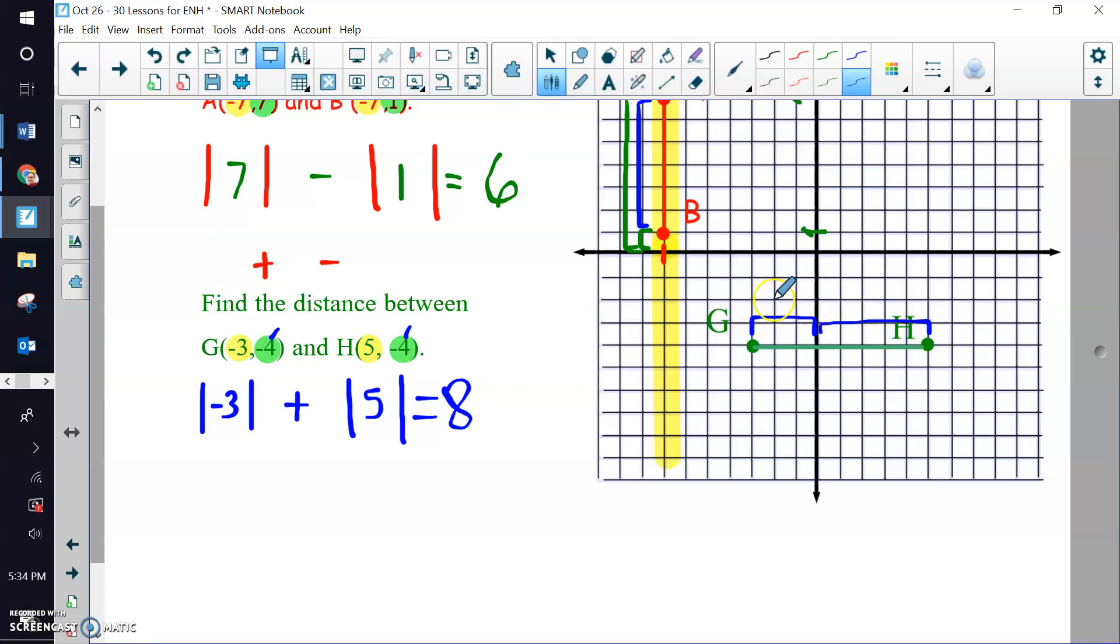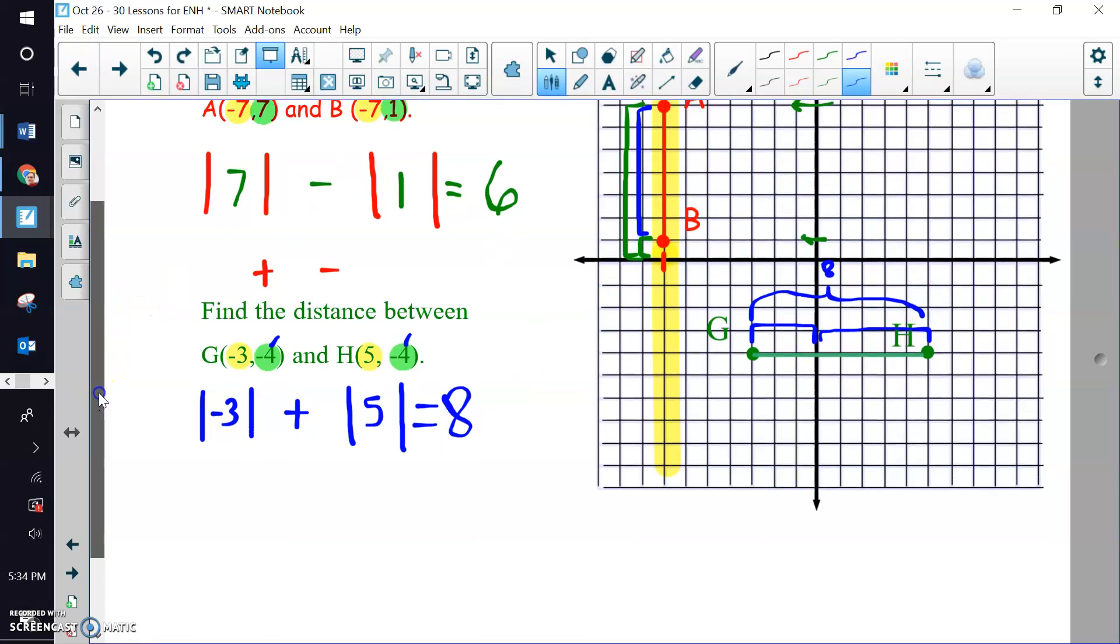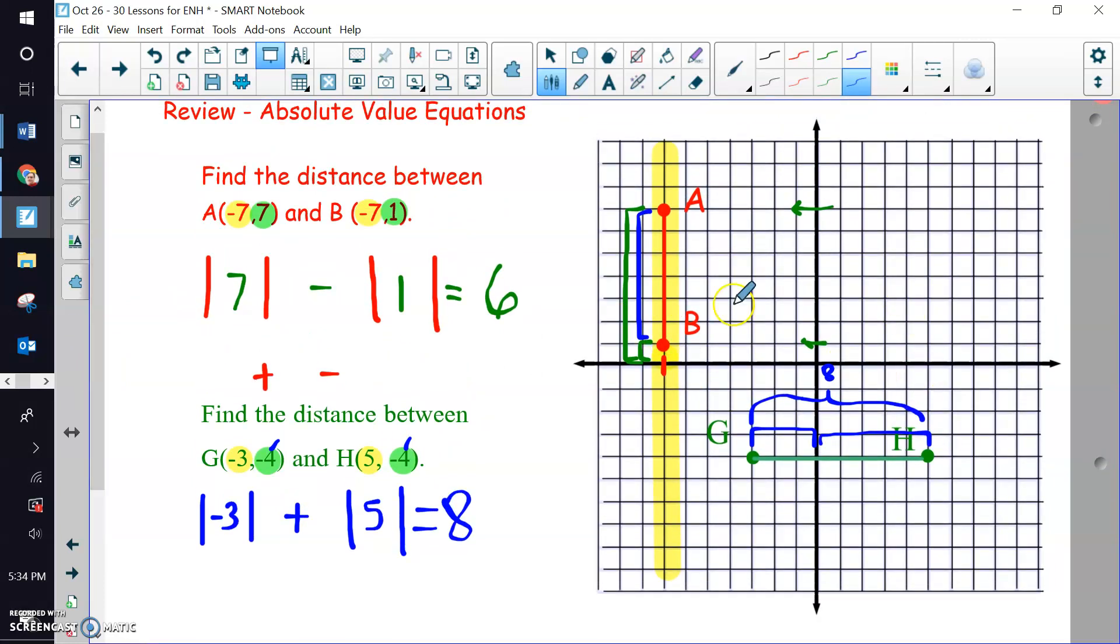And look, they're side by side. So we would add them to find a total of 8 units or 8 steps or something. So that's how we would use the absolute value equations when we're working on a coordinate plane or we're just looking at two points.